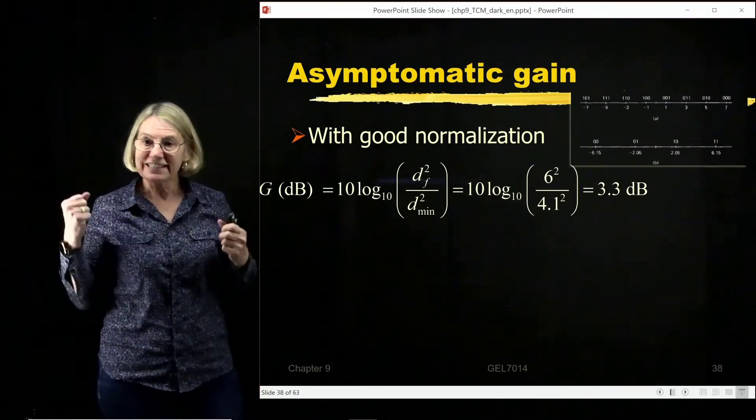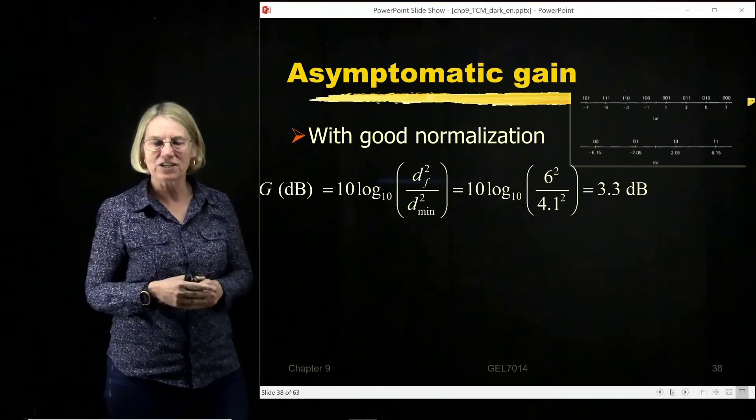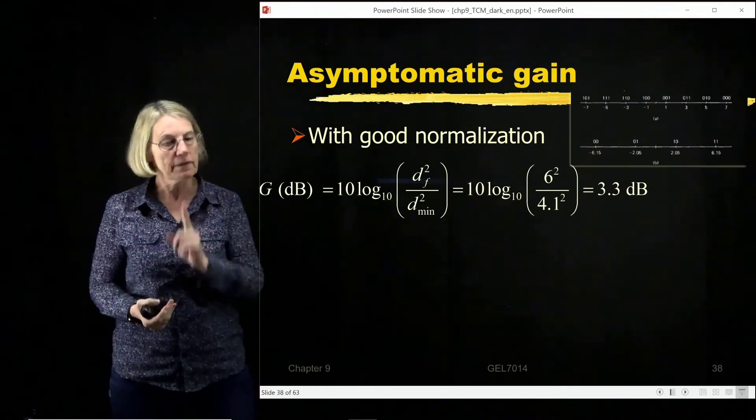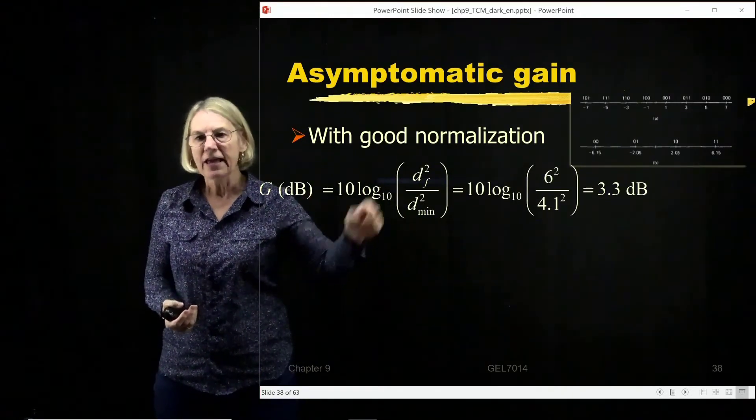So now I can calculate the gain. What have I gained in using Trellis-Coded Modulation? And remember, I'm going to use this good normalization. So the gain in dB would be 10 log 10.